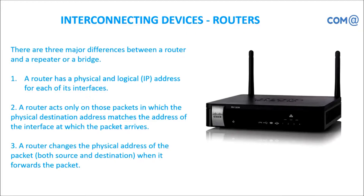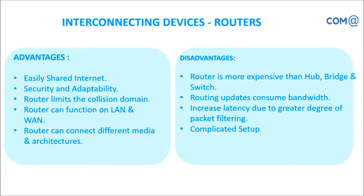There are three major differences between a router and a repeater or bridge. First, a router has a physical and logical IP address for each interface — Ethernet interface, serial interface, voice-over interface, multiple interfaces available for individual devices, not like a switch. That gives an advantage: it'll have a separate controller and you'll get faster communication. It works at Layer 3 and passes network packets to other systems. Advantages: easily shared internet, security and adaptability, routers limit collision domains so there will not be any collisions. Routers can function for both LAN and WAN and can connect to different architectures like token ring and Ethernet.